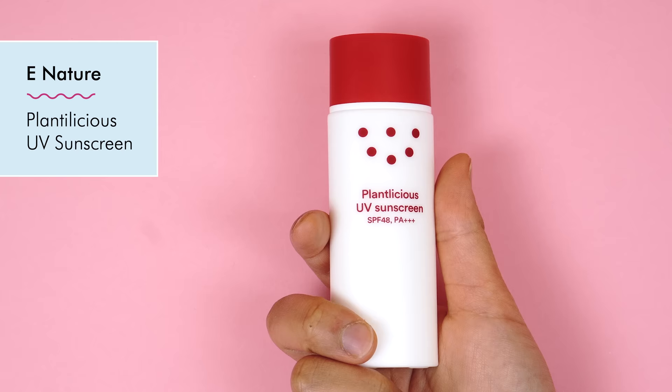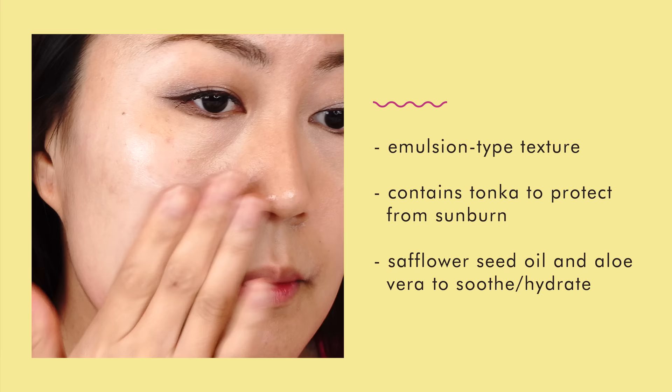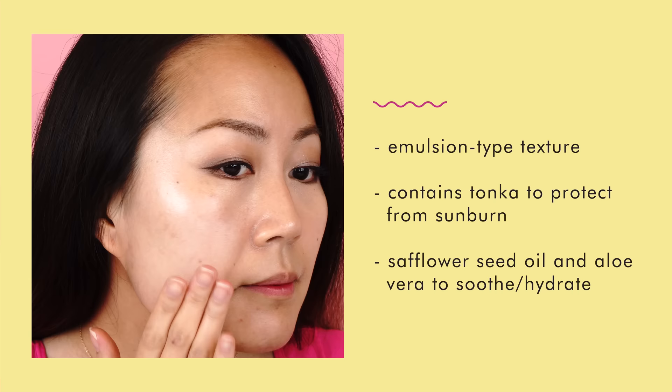If your skin often feels tight and dry, look for a lightweight formula that adds water, not oil, to your skin. A great hydrating sunscreen is the Plantalicious UV Sunscreen by eNature. This has more of an emulsion-type texture and really adds a boost in hydration. It contains tonka that protects against sunburns, as well as safflower seed oil and aloe vera to help soothe and hydrate.